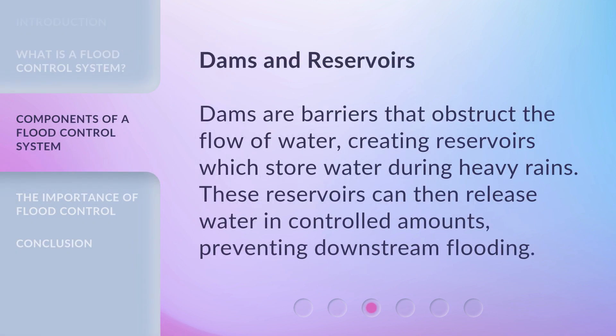Dams and Reservoirs: Dams are barriers that obstruct the flow of water, creating reservoirs which store water during heavy rains. These reservoirs can then release water in controlled amounts, preventing downstream flooding.